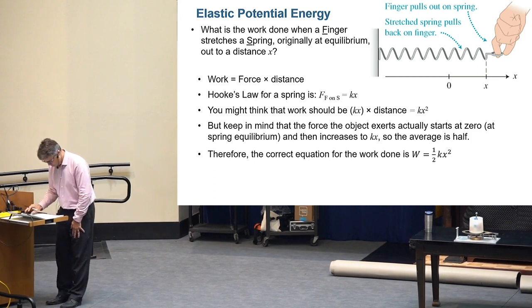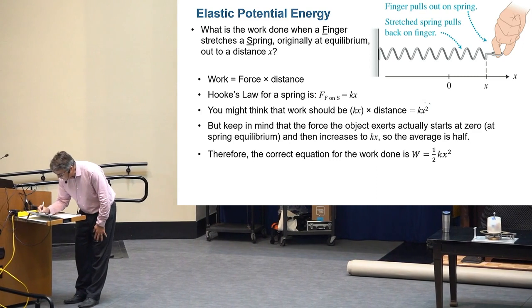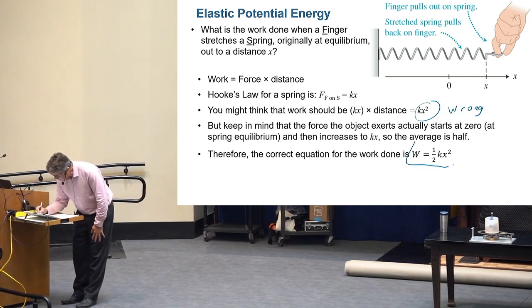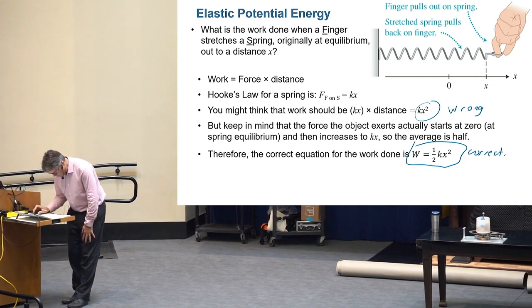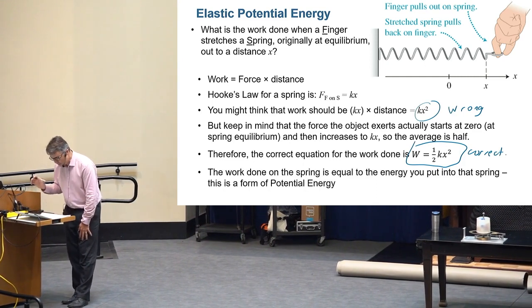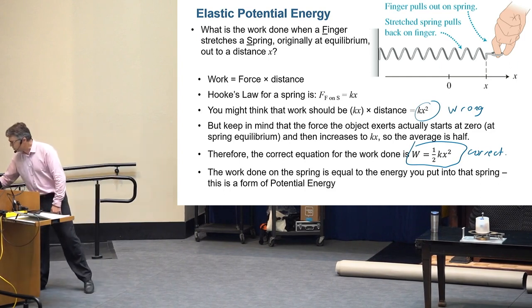So you would think kx times x is kx squared, but you'd be wrong. Keep in mind that the force started at zero, and kx is just the maximum, right? I guess at that moment when you got to x, now it is at kx. So you went from zero all the way up, and so there's an integral of a triangle, and it's 1/2 base times height. That's where the half comes from. Can you imagine that? It's linearly proportional. So by the way, wrong. And this is correct. That's where the factor of a half comes from, but that was a good question. The work done on the spring is equal to the energy you put in the spring. That is a form of potential energy.